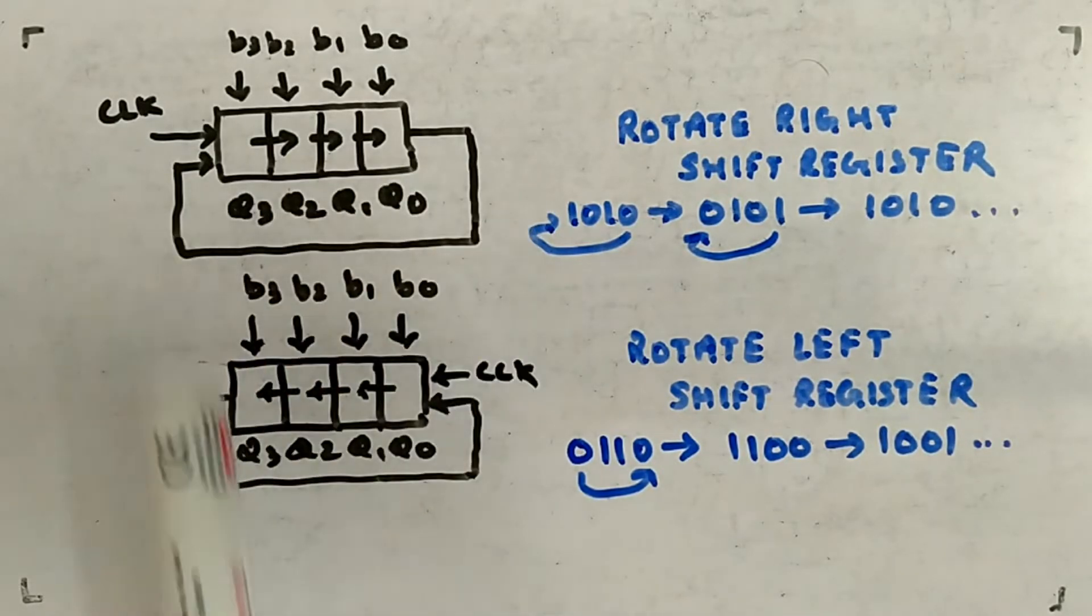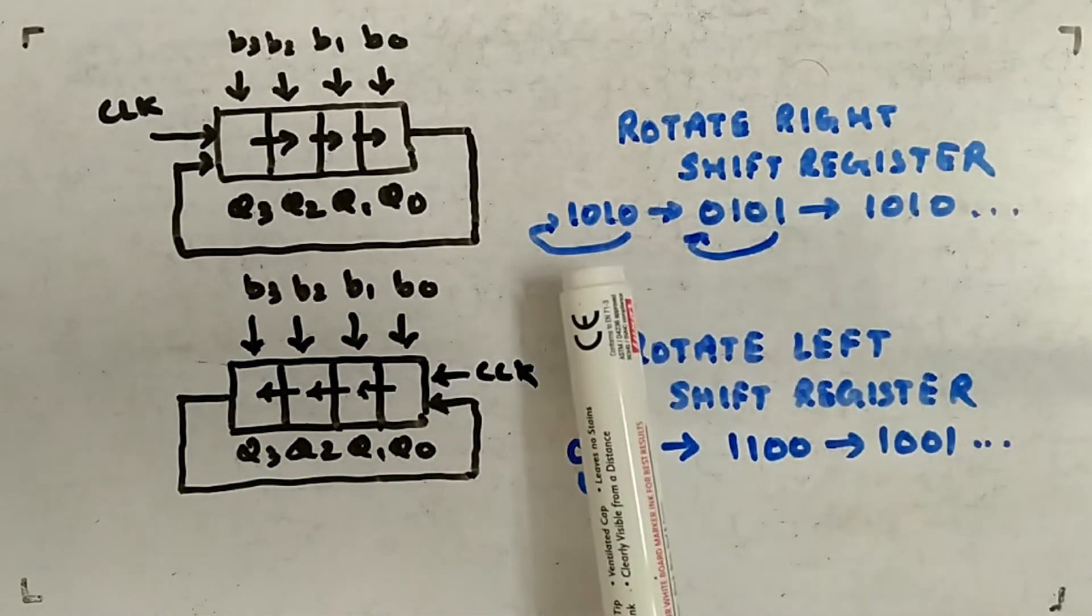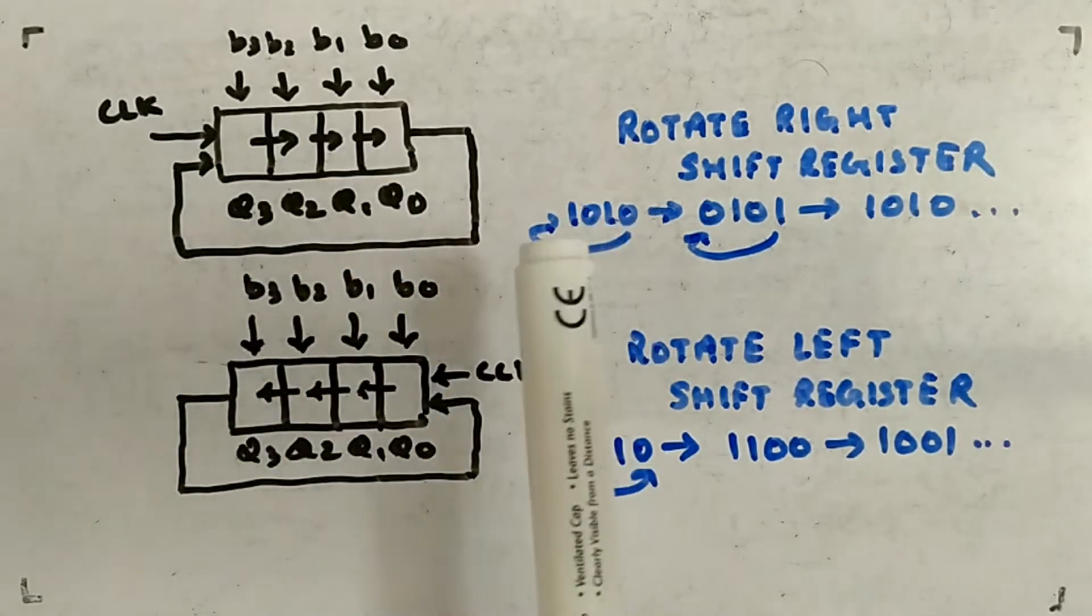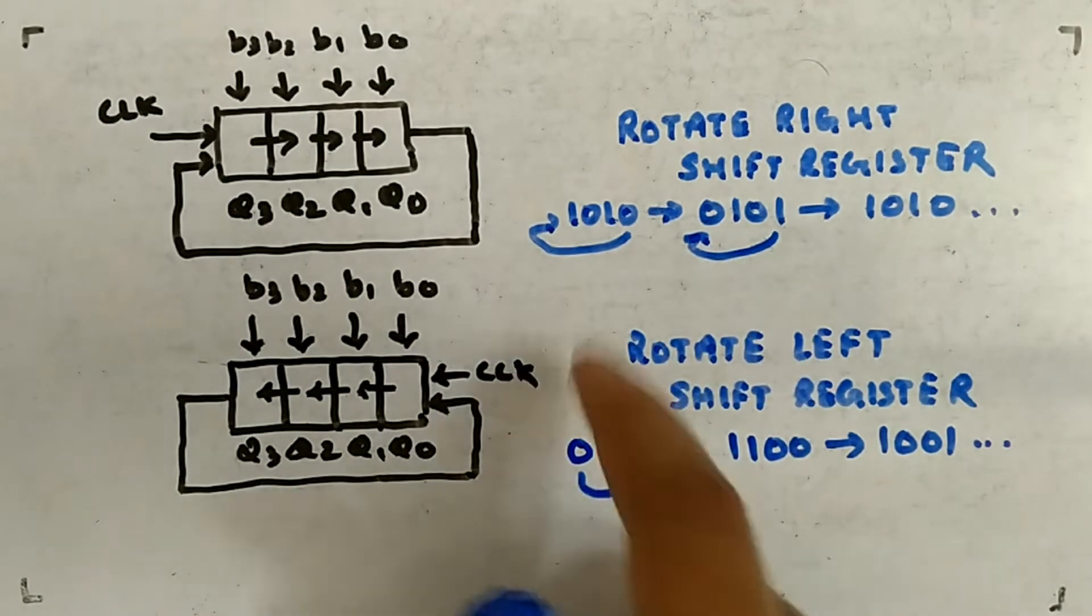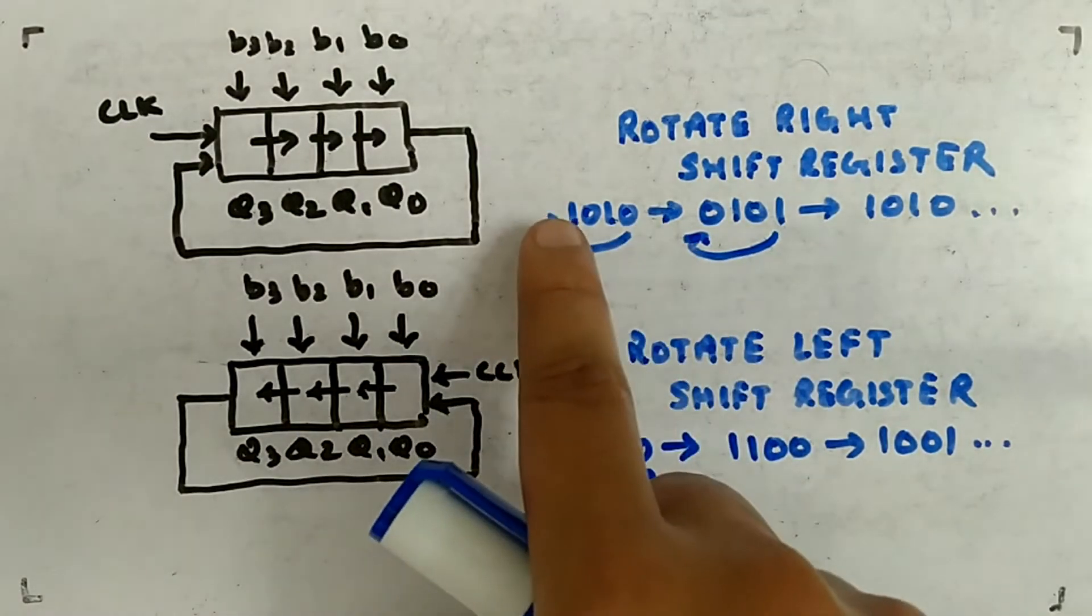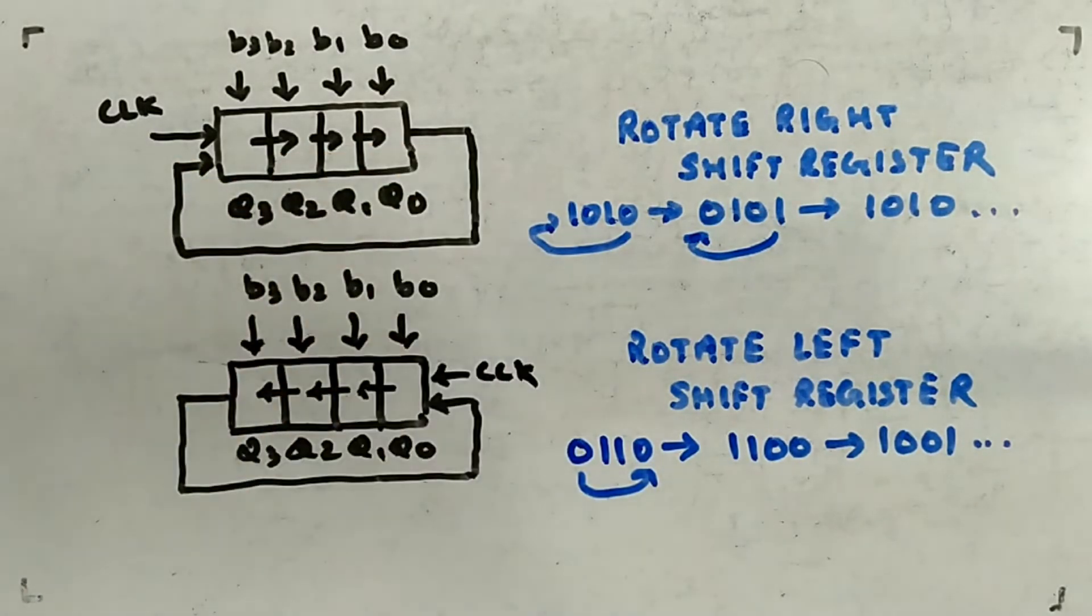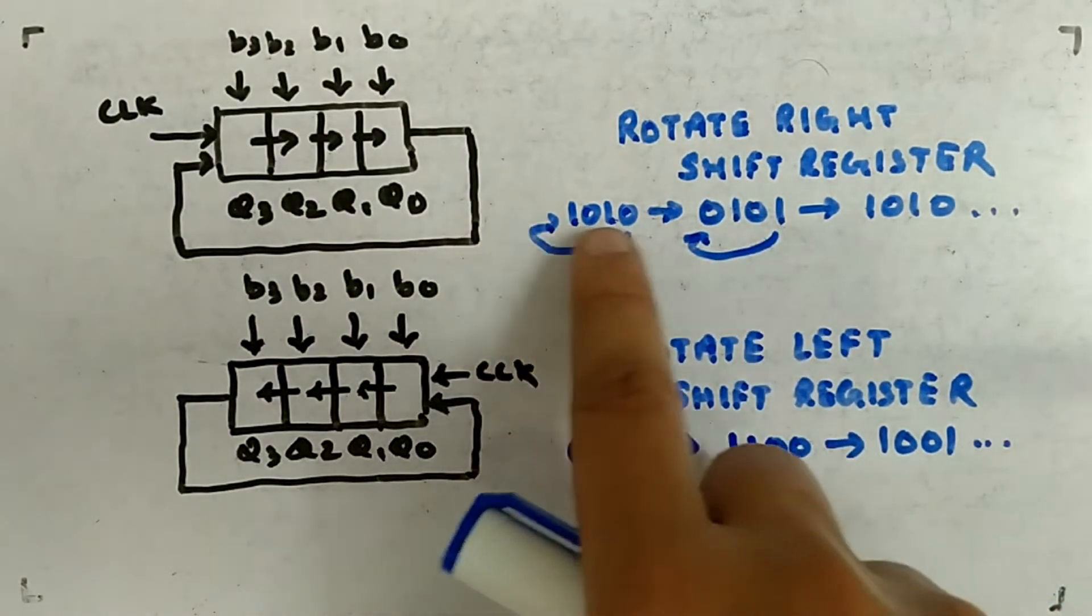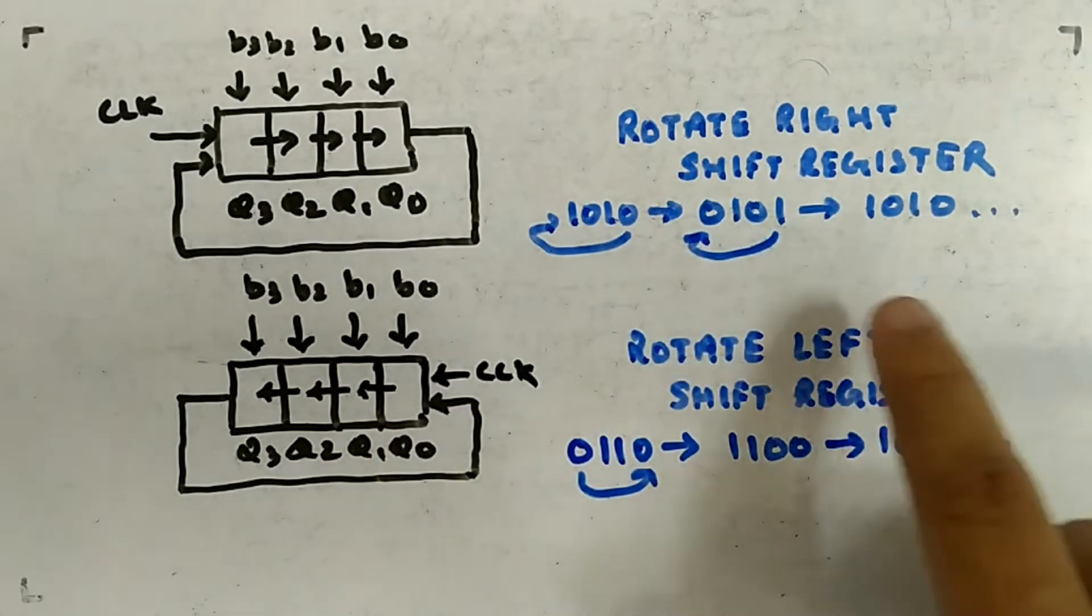Rotate right means if you have 1010 fed inside these boxes, next clock pulse this will become 0101 because the last bit will come to the first. This 0 will come here and everyone will get shifted 1 bit. So 1010 becomes 0101 - this 0 comes here, 1 shifts, 0 shifts, 1 shifts to make 0101.